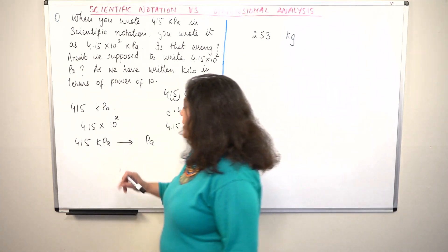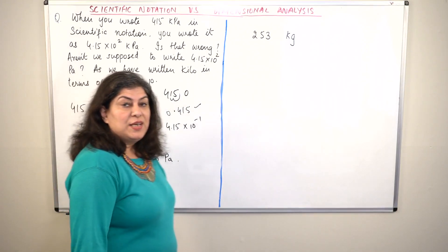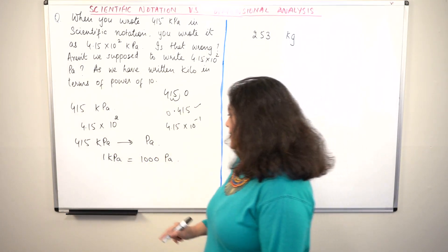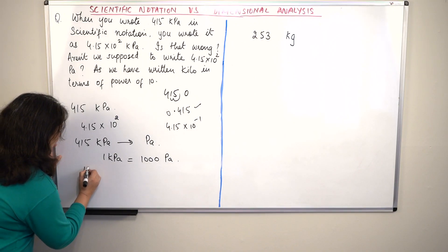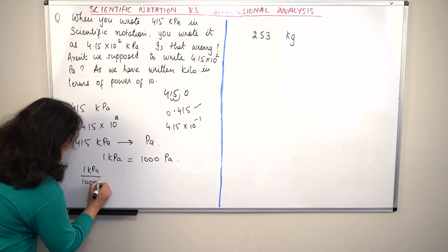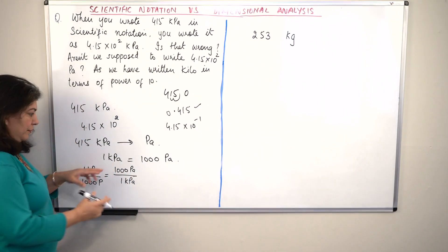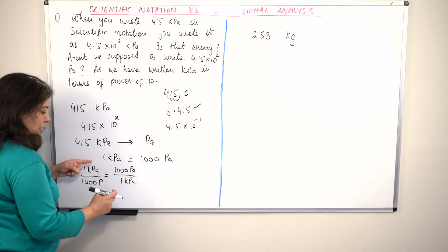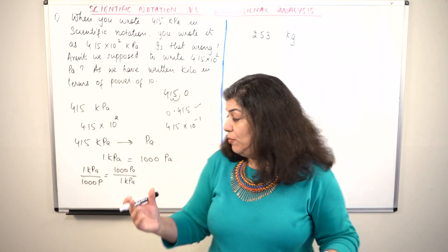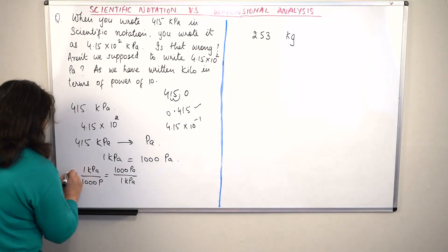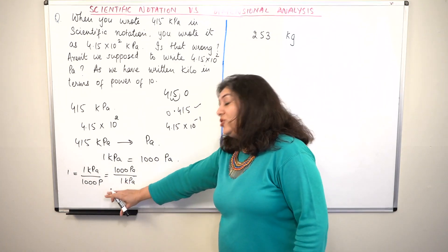We know that 1 kilopascal is equal to 1000 pascals. From this, you can form unit factors: 1 kilopascal / 1000 pascals equals 1000 pascals / 1 kilopascal. The ratio of these should be equal — since they have the same value, each ratio equals 1. That is why these are known as unit factors.